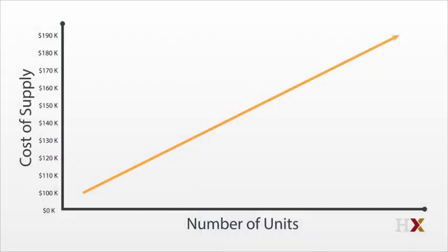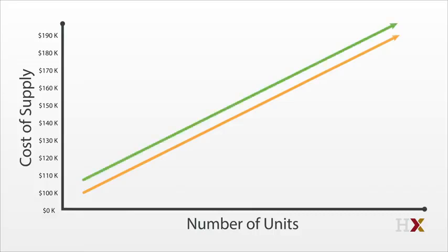We'll spend a bunch of time on the reasons why supply is so much easier in some places than in others. But for now, we'll just note that the supply costs will be a function of construction costs. If it costs more to build in Gotham, then the supply curve will shift upward. If it costs less, then the supply curve will shift down.